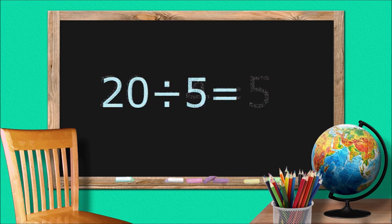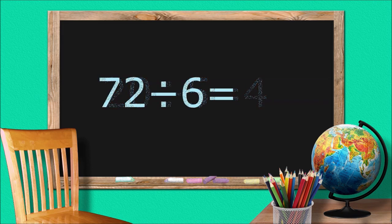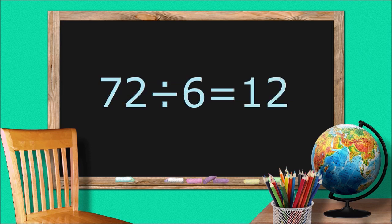20 divided by 5 equals 4. 72 divided by 6 equals 12.